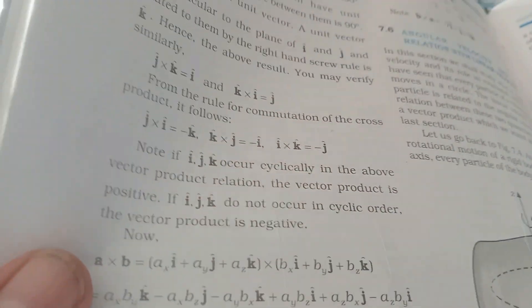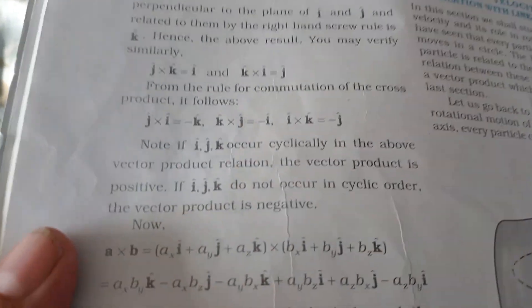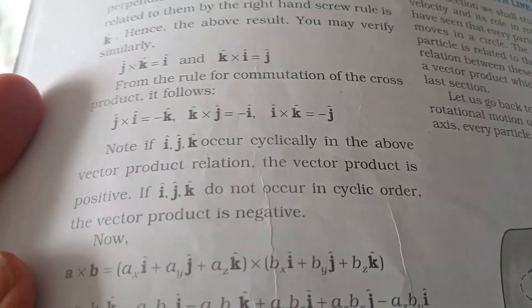Cyclically, in the above vector product relation, the vector product is positive if i, j, k occur in cyclic order. If i, j, k do not occur in cyclic order, the vector product is negative.